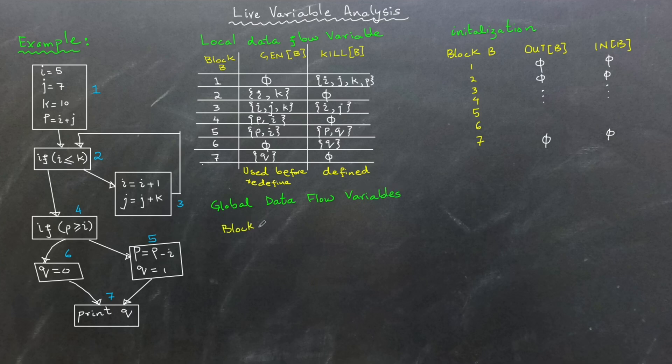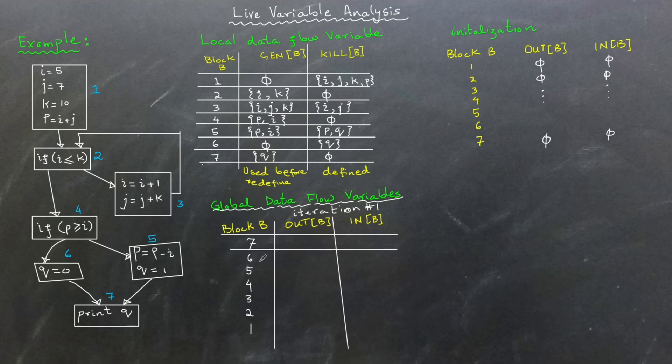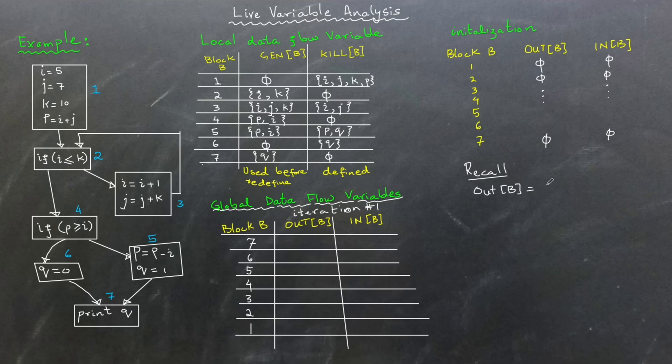After that, we iteratively compute these sets until their values converge, meaning they remain the same across consecutive iterations. To simplify calculation and speed up convergence, we start from the last basic block and move upward towards the first block. While this is not mandatory, it often helps the system stabilize more quickly.